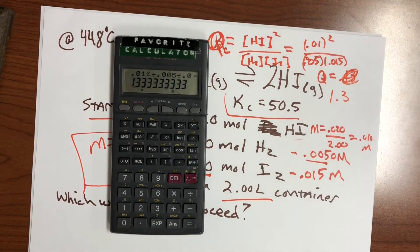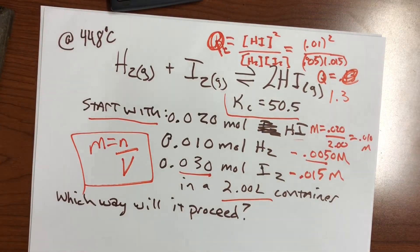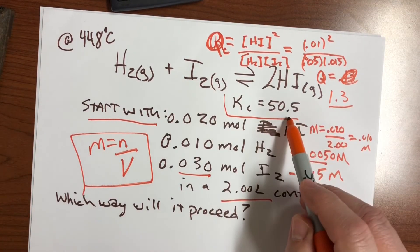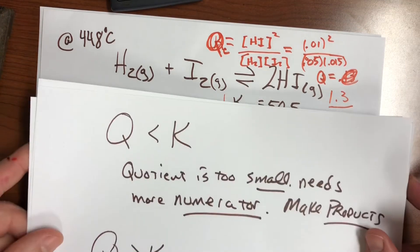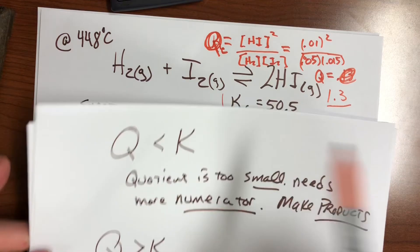So 1.3 is our Q value, so now let's go back. Q is 1.3. K is 50, so Q, 1.3, is less than K. So this number is too small.